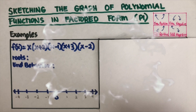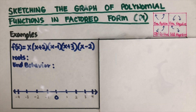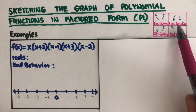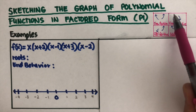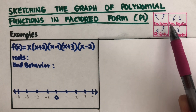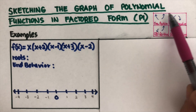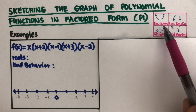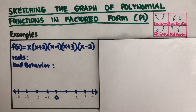Hello everyone! Today we will be sketching the graph of polynomial functions in factored form. This is the first part. On the side right here, I have placed the four possible shapes of the end behavior of every polynomial function. If you want to know how we got these shapes, there's a different video for that — I will put the link in the description box below.